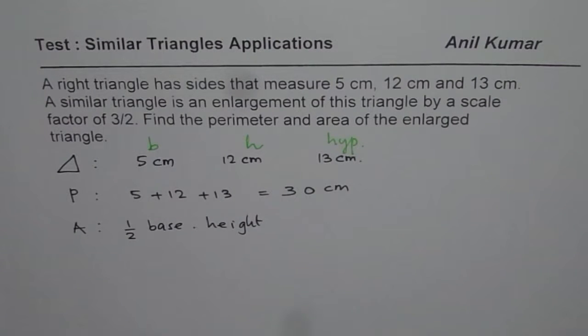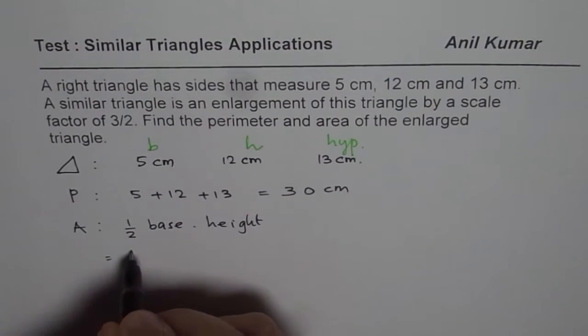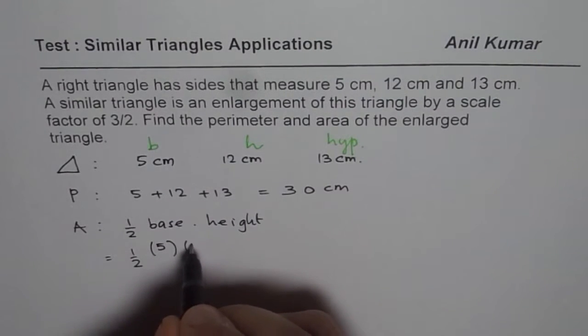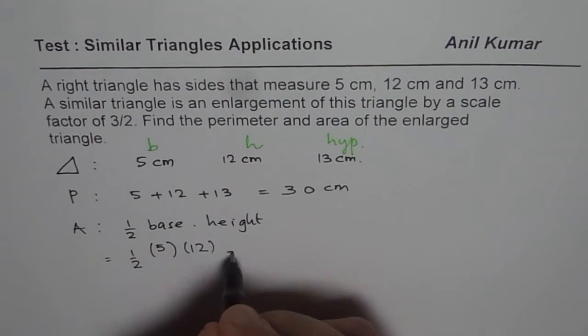I am not sketching this triangle on purpose. You need to visualize at times. So the area for this triangle is equal to half of base, let us say 5, and height is 12. Half of 12 is 6, 6 times 5 is 30.